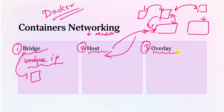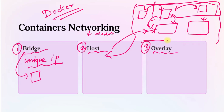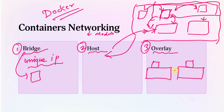The third mode is overlay networking. In overlay mode, you can create a virtual network that spans multiple hosts. This means your containers from one host can communicate with containers on a different host. When containers are hosted on different hosts and you want them to communicate, you need overlay networking mode.